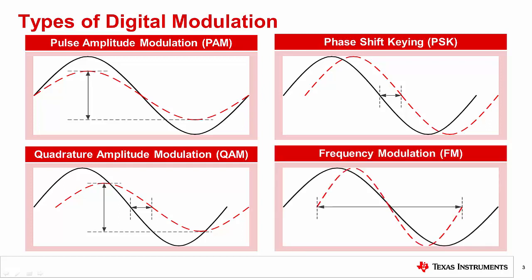Frequency modulation modulates the carrier frequency. In digital communications, discrete frequencies are chosen as symbols, each representing a sequence of bits. Other examples include FM radio and linear frequency modulation, or LFM. LFM is a continuous linear sweep of the carrier's frequency. LFM is typically not used for data transmission; however, it is used in radar systems in order to achieve pulse compression, which improves spatial resolution to allow identification of closely spaced targets.